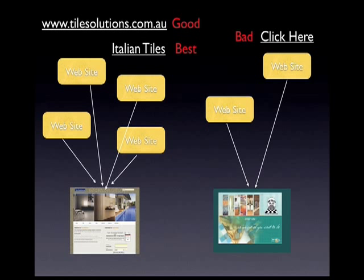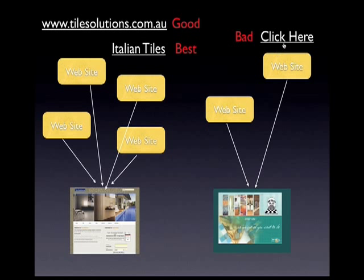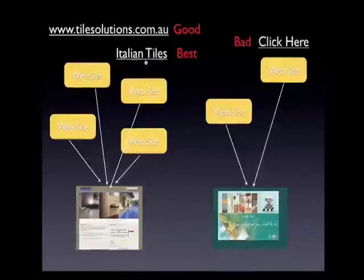I'll show you here. If you look at these two websites, this website here has four links to it, this website has two. Google is going to rank this website above this website, all things being equal. Now, if these links were just the tile solutions address, that's not too bad. If they were simply 'click here', that's terrible — Google doesn't know what 'click here' means, so it's going to associate that phrase with this website. Whereas if this site wanted to be ranked for 'Italian tiles', then making these links using 'Italian tiles' as the anchor text is better than everything else.